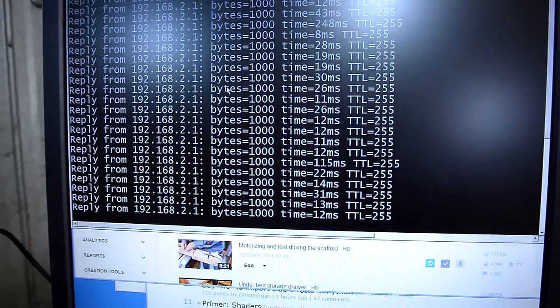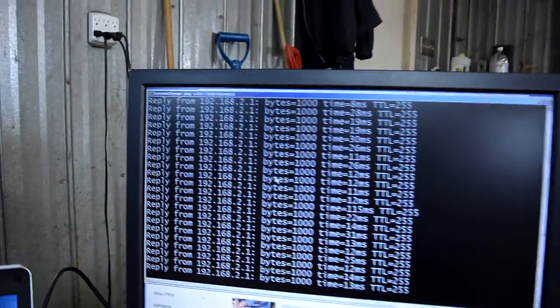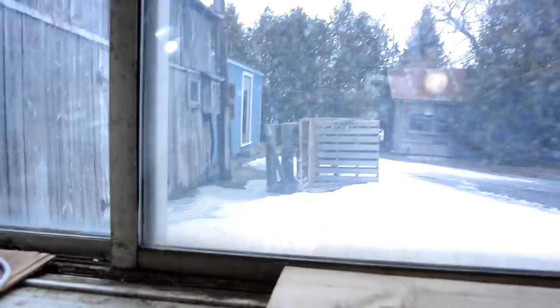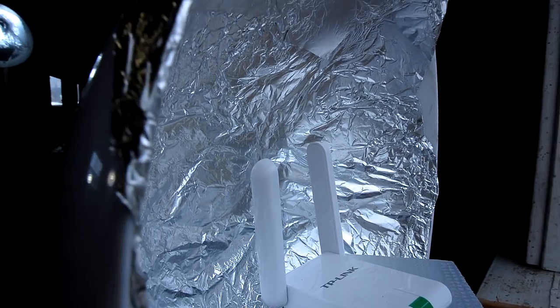And now I'm getting sometimes as low as 11 milliseconds because I've gotten fancier with the reflector. What I've played around with is something that's more of a dish reflector with the antenna in the middle right there.